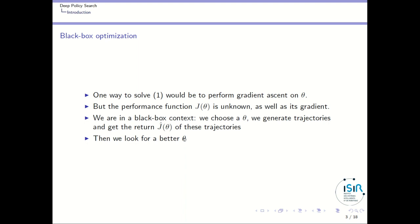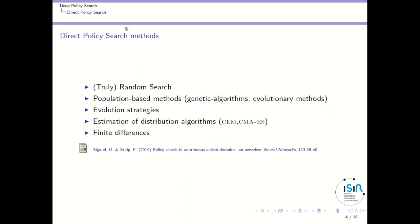We can get some points of J of theta by sampling different thetas, but we don't have access to the analytical function. Once we have found the approximate value for a particular theta, we can look for a better theta. I will cover two different families of methods: first, direct policy search — including truly random search, population-based methods like genetic algorithms, evolutionary strategies, cross-entropy methods, and CMA-ES — and then in the second part, policy gradient methods.